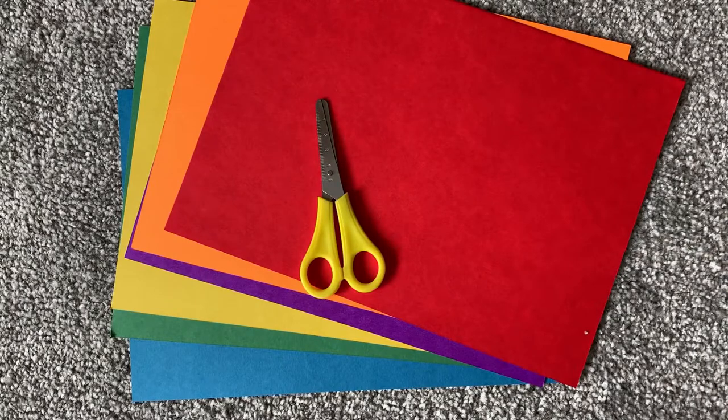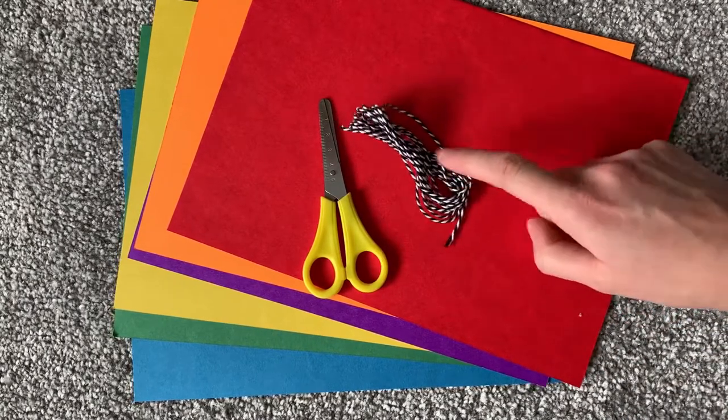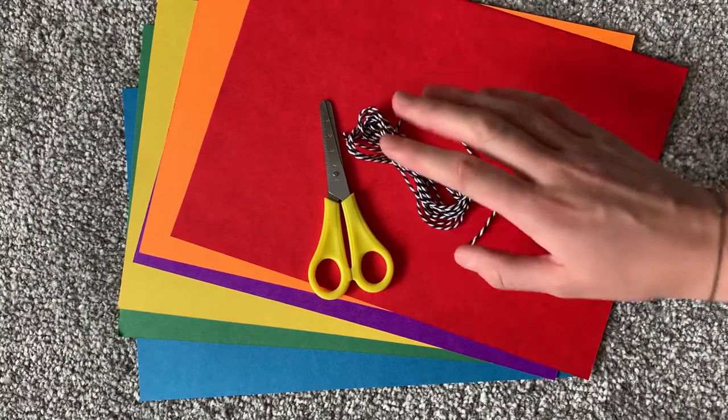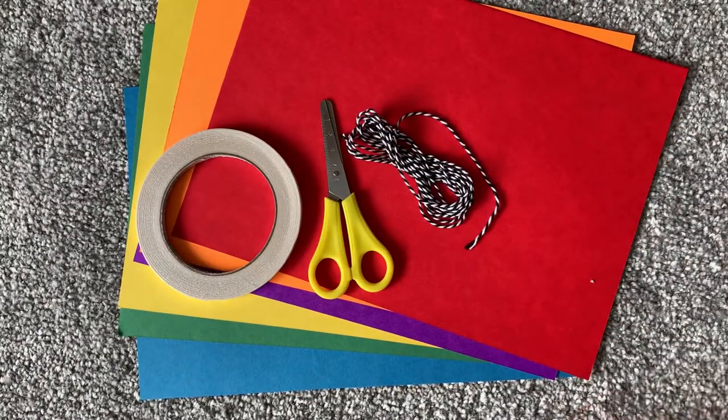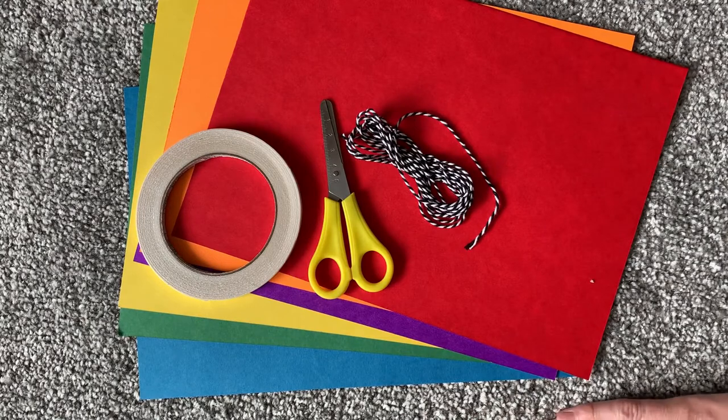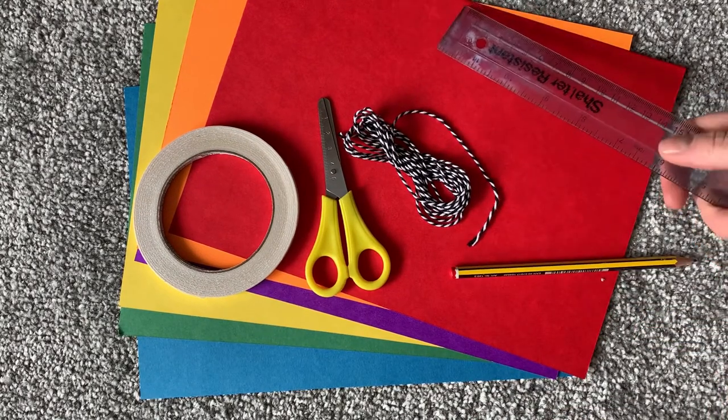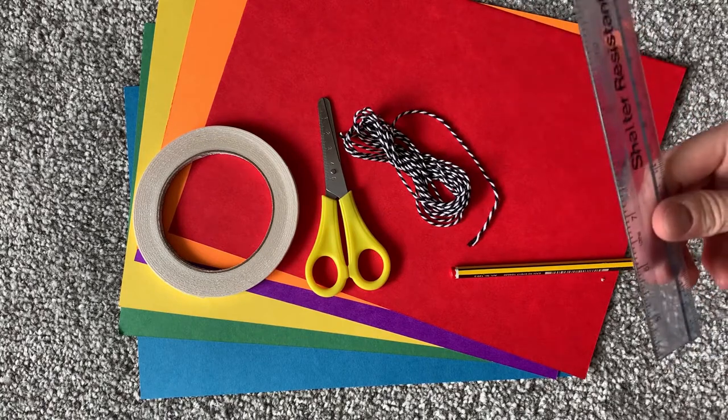You'll also need some scissors, a length of string. I cut mine to 8 feet long so you might need a grown-up's help with a tape measure with that. Some double-sided sticky tape or if you prefer you could use PVA glue. And you'll also need a pencil and a ruler just to measure out the strips of paper.